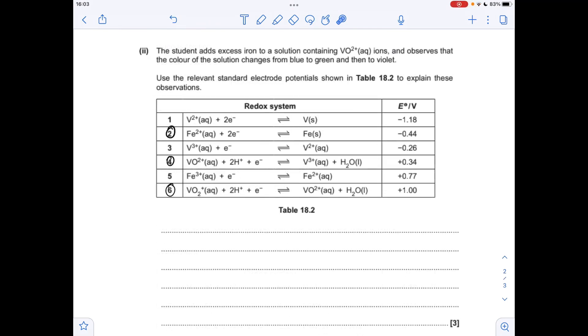So moving on to the next part about the electrical potentials, you'll see I've circled three of these redox systems. So obviously we need one that's got VO2+ in. You can see that's in 4 and 6. However, it's going to be reacting with ion. So ions on the right hand side you can see in redox system 2. So that means we need number 4 because the VO2+ is on the left.